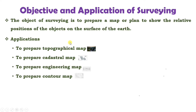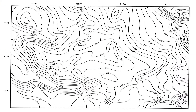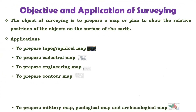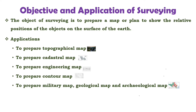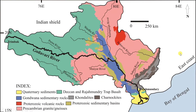The next application of surveying is to prepare the contour map. Other applications include preparing the military map, geological map, and archaeological map. Military map shows the plan of strategic importance, geological map shows the strata in the earth crust, and archaeological map shows the relics of antiquity.